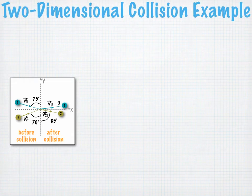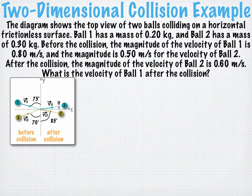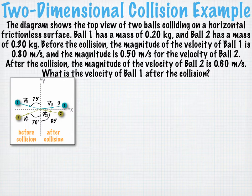Let's look at an example of a two-dimensional collision problem. The diagram shows the top view of two balls colliding on a horizontal frictionless surface. Ball one has a mass of 0.2 kilograms and ball two has a mass of 0.3 kilograms. Before the collision, the magnitude of the velocity of ball one is 0.8 meters per second and the magnitude is 0.5 meters per second for ball two. After the collision, the magnitude of the velocity of ball two is 0.6 meters per second. What is the velocity of ball one after the collision?